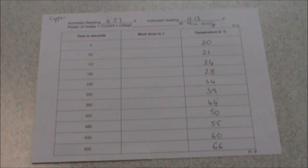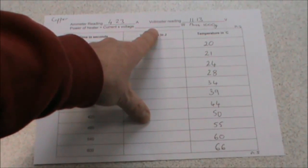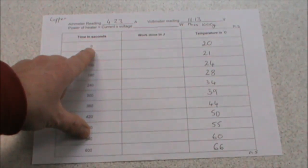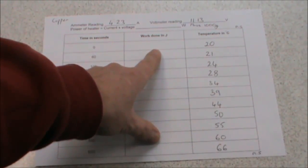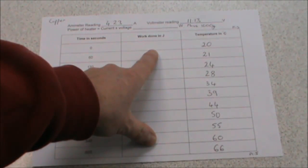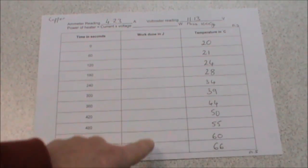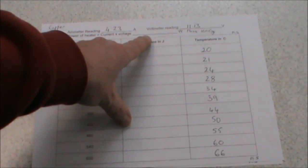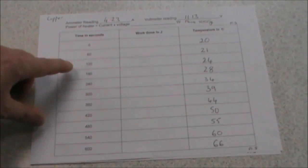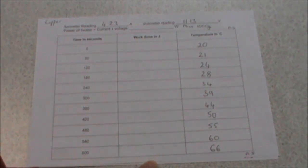The next stage is to calculate the work done in joules. To do this, we multiply the power of the heater that you have just calculated by the time in seconds. So our first one will be zero, and as anything multiplied by zero is zero, your first result in that box will be zero. You now need to calculate the rest of the work done by multiplying the answer on this line by each of these times in turn. You only need to record to one decimal place.